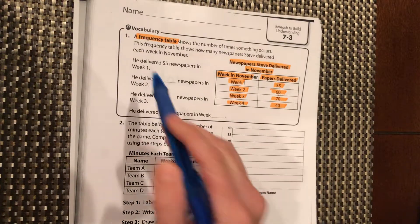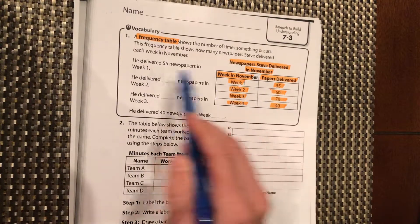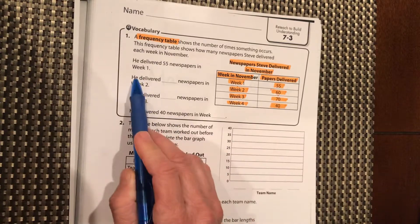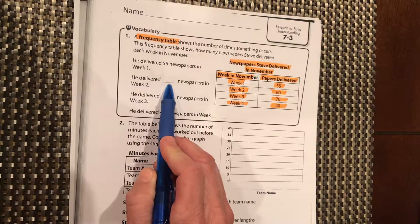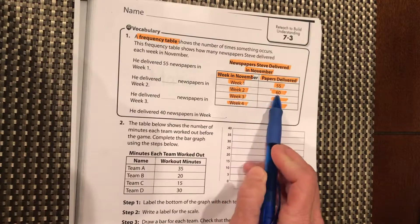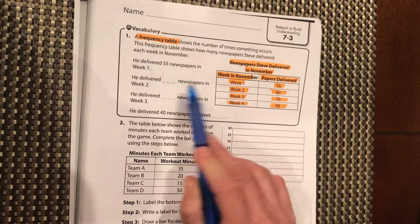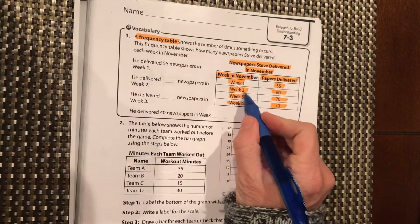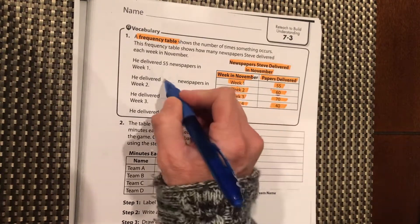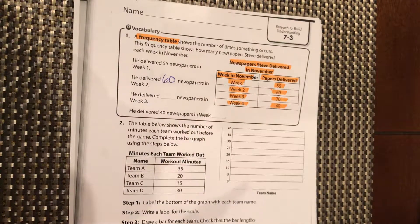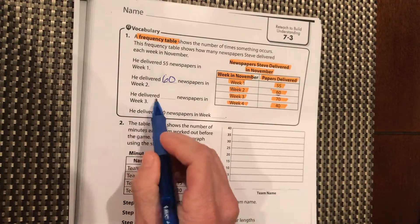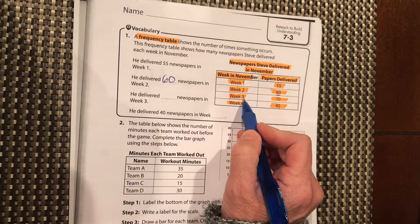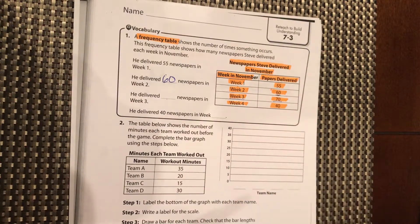He delivered 55 newspapers in week one. There's week one, there's 55. He delivered a blank number of newspapers in week two. Well, here's week two. How many newspapers did he deliver? Fill that in right there. So week two, he delivered 60 newspapers. He delivered how many newspapers in week three? Find week three and write down how many newspapers he delivered.